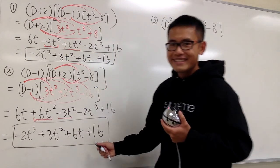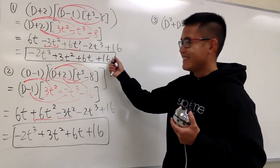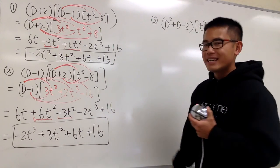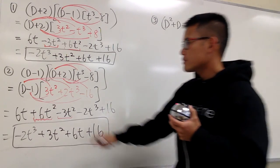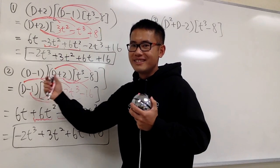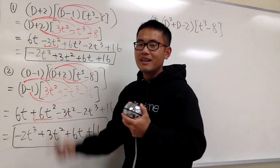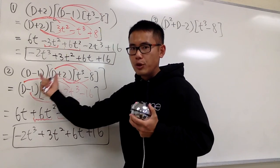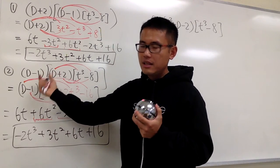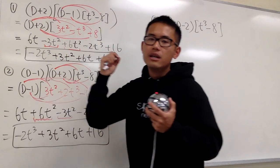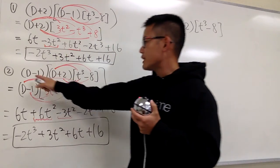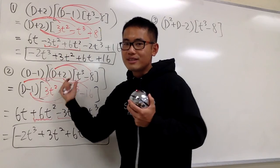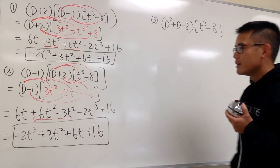Notice that the results for number 1 and number 2 are the same. This suggests that the order of the operators doesn't matter — under one condition: the operators cannot contain any variable t. If they just have numbers, you can rearrange them freely.